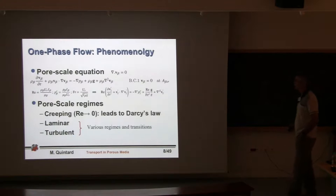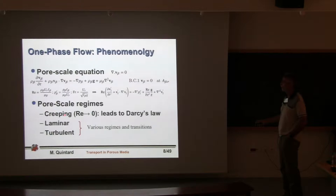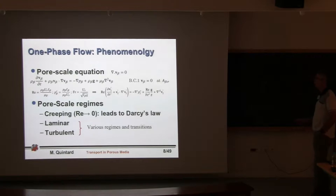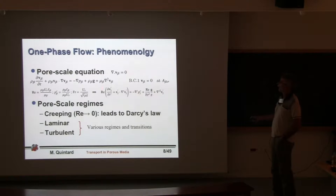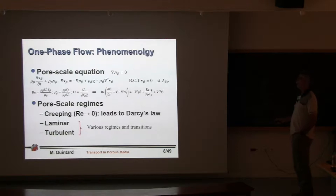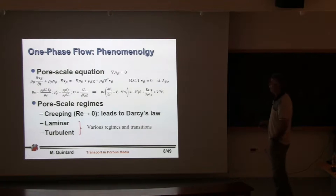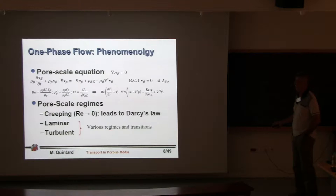At low Reynolds number we have the creeping regime, which leads to Darcy's law, as discussed this morning. If I increase the Reynolds number, I have a series of things that will happen: the nonlinear term and the transient term will play a role. The difficulty is that there are various regimes and transitions between them. The picture is quite complicated.